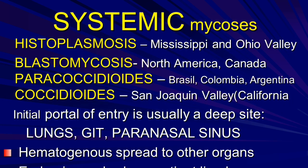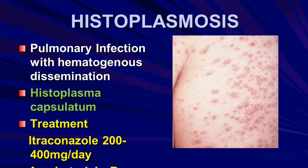Systemic mycoses include histoplasmosis, blastomycosis, paracoccidioidomycosis, and coccidioidomycosis. Histoplasmosis is caused by Histoplasma capsulatum, also called Darling's disease — pulmonary infection with hematogenous dissemination. Treatment: itraconazole 200 mg or 400 mg per day.